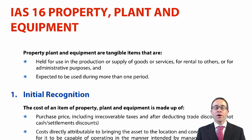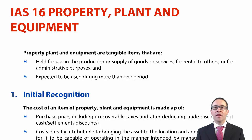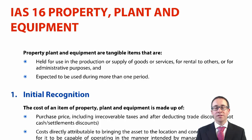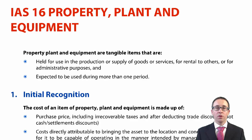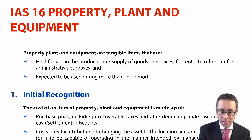We're going to look at property, plant and equipment — one of the first accounting standards that deals with your non-current assets. Here we're looking at tangible non-current assets. In later chapters, we'll look at your intangible non-current assets, but here it's all about your tangible non-current assets.